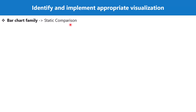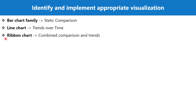Next we have the line chart and other visuals which belong to the line chart family. These visuals are usually used to show trends over time. So whenever you have time involved in a visualization, the best way to represent that data is on a line chart.